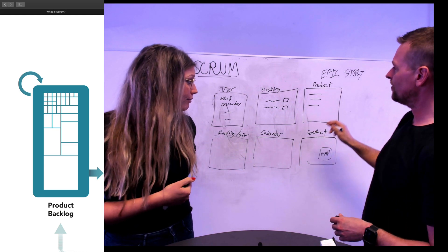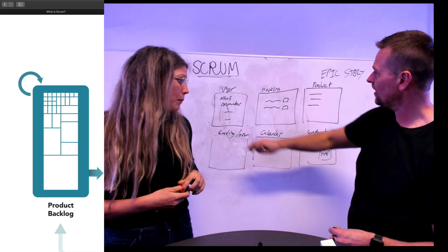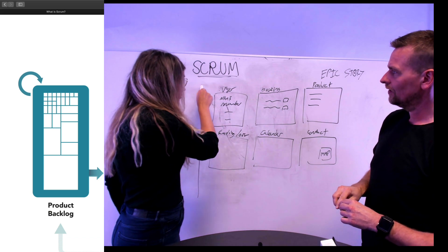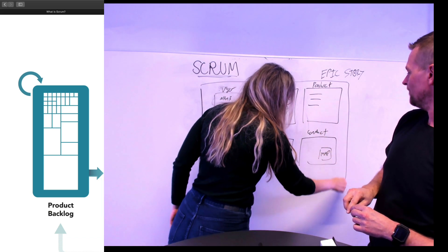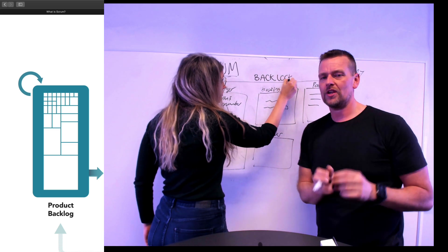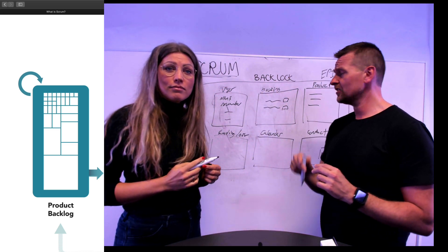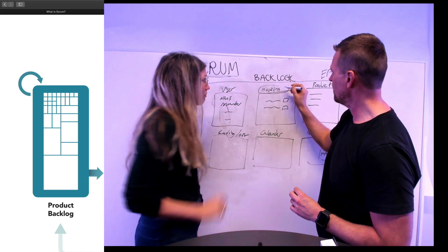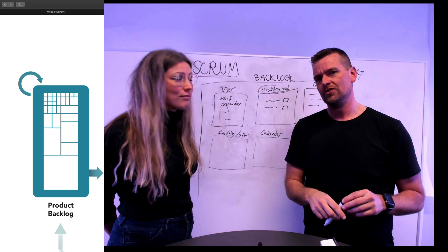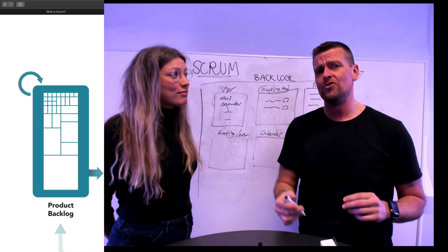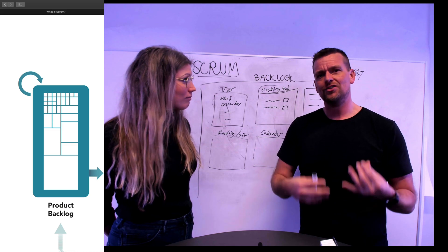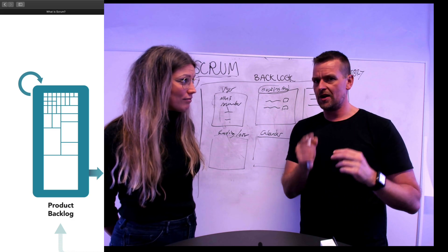So now we have a backlog with a lot of big stories — some bigger than others. That's our backlog. Normally what we'll do next is start breaking these down into stories. Epic stories first — for example, 'we need a booking area' — and then we break that down into actual user stories. That would be something like: 'As a user, I would like to be able to book a time.' Or: 'As an owner, I would like to create a product.' We'll dive into that later.